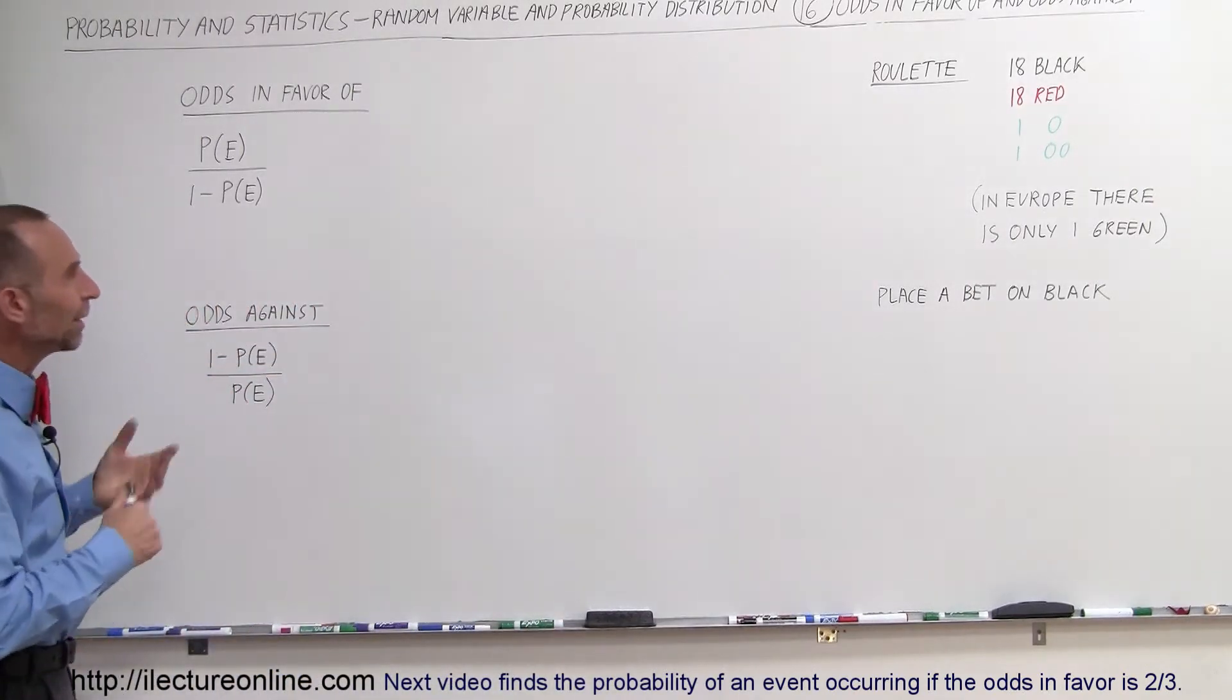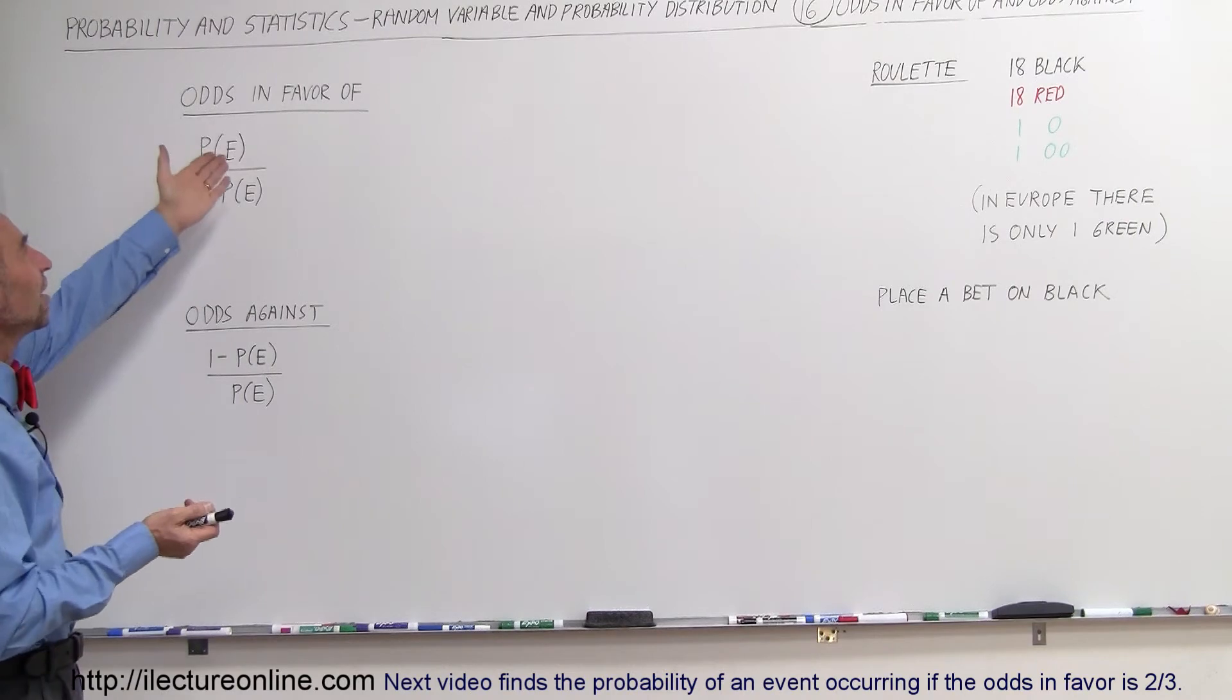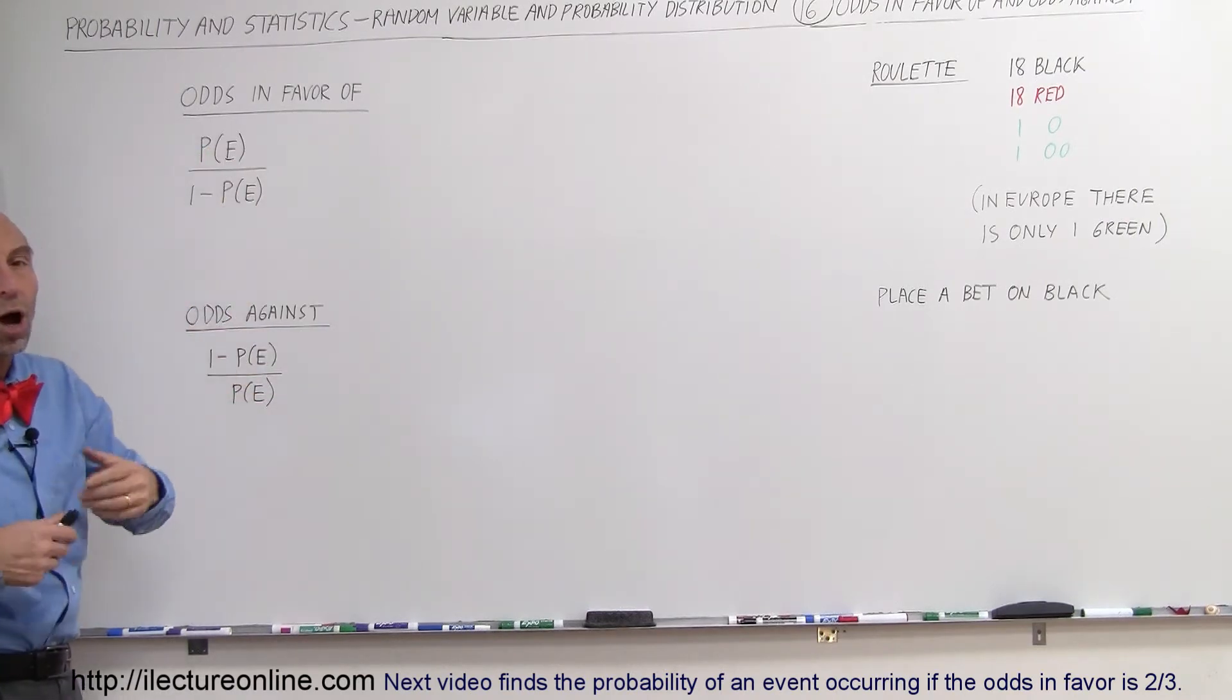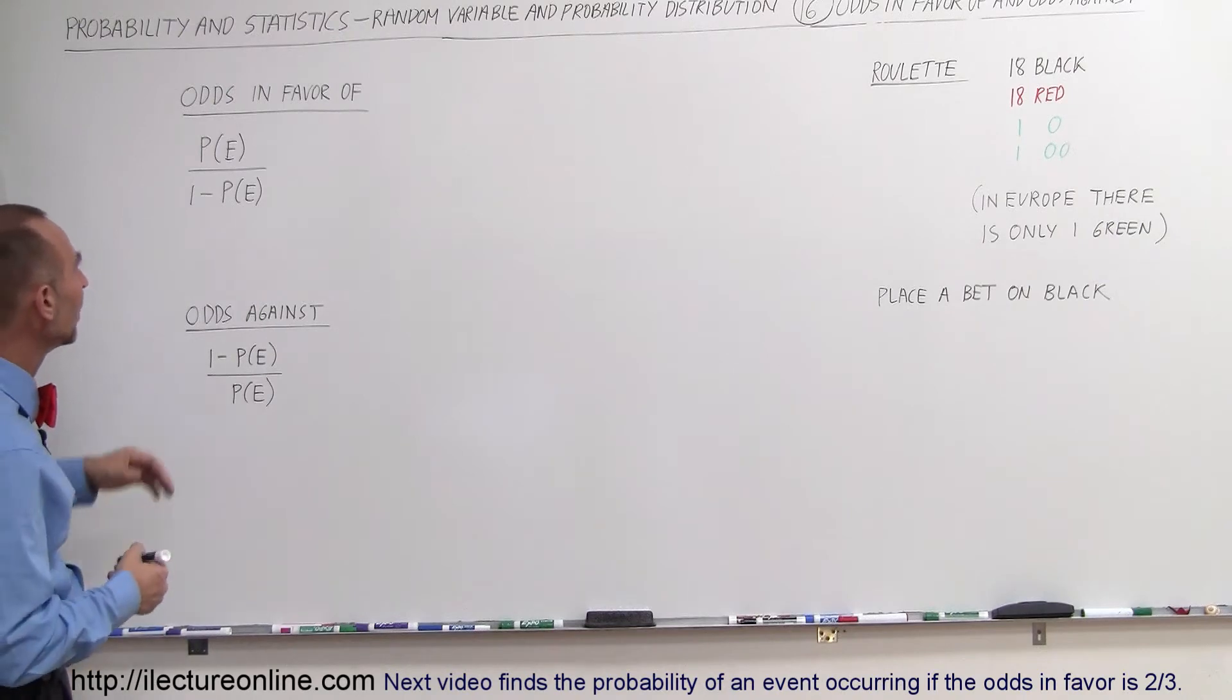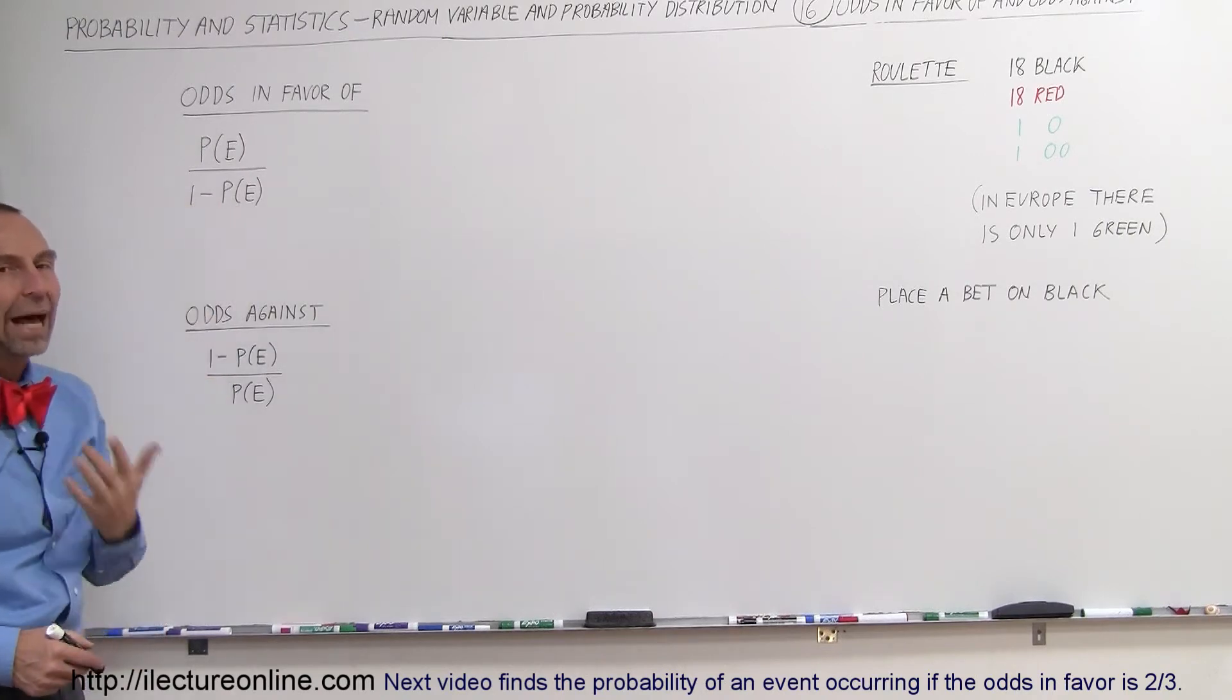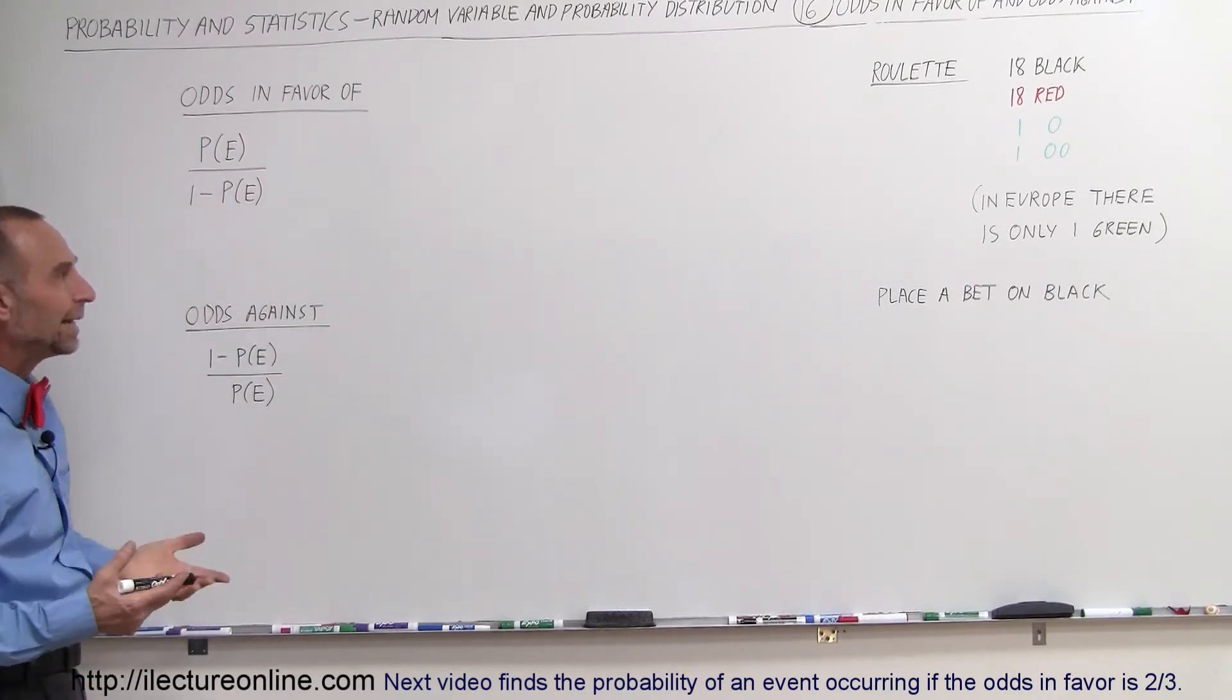Alright so we're going to place a bet. What are the odds in favor of winning and what are the odds against winning? So the odds in favor is the probability that the event you want will occur divided by one minus that probability, that is, divided by the probability that the event will not occur. So we want a winning event.